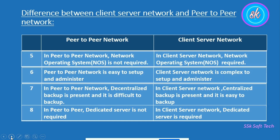The eighth comparison point is that in a peer-to-peer network, a dedicated server is not required. Each machine acts as a server as well as a client, so each machine manages its own resources. So a dedicated server is not required. But in client-server network, a dedicated server is required because the server holds all the resources and is responsible to manage all those resources.